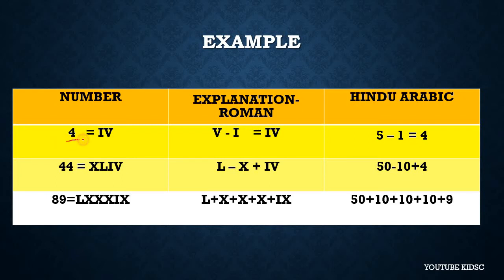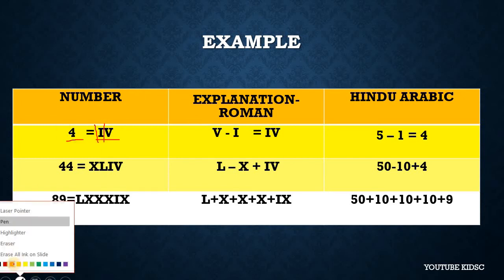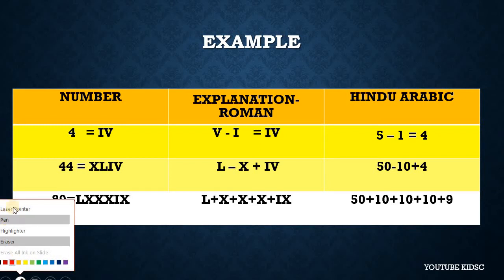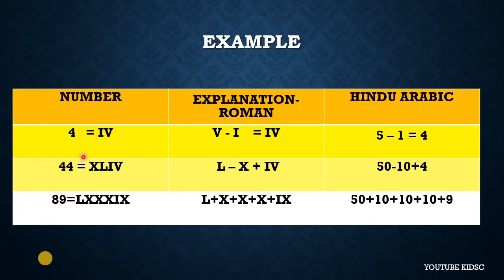For example, the number 4 is written as IV. Here I is smaller than V and it is kept on the left, which means we subtract: V minus I equals IV, which is 4. 5 minus 1 is equal to 4.